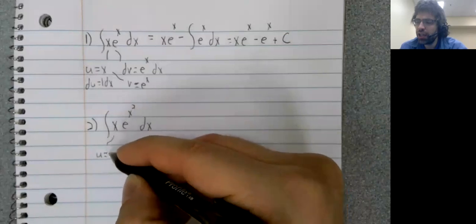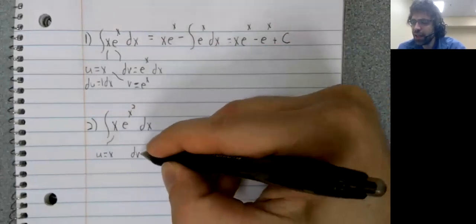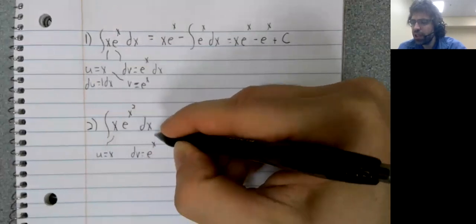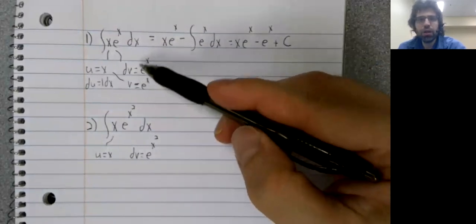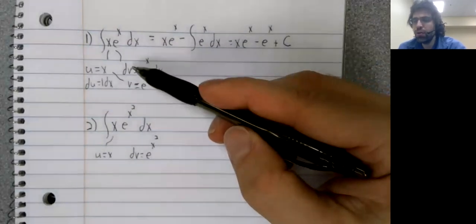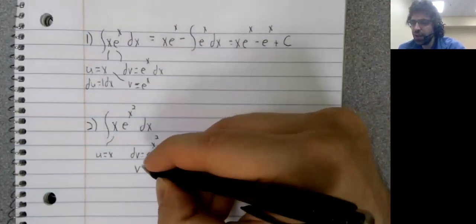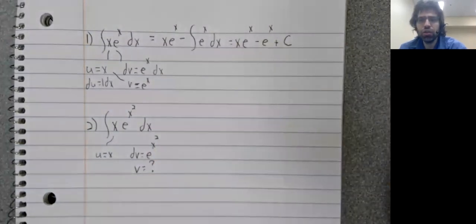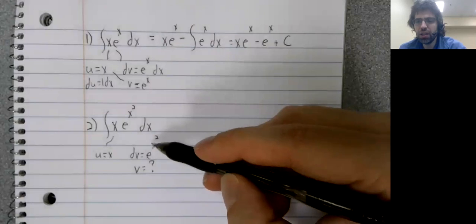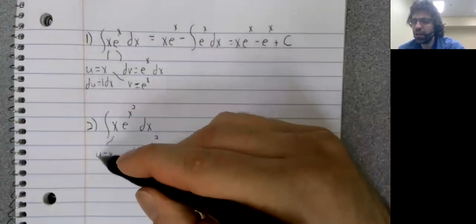You could try by letting U be X and DV being E to the X squared. But unlike here, where we go from DV to V easily, we cannot take the integral of E to the X squared. So we can't continue with this.